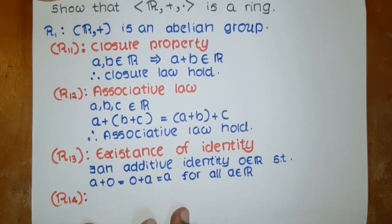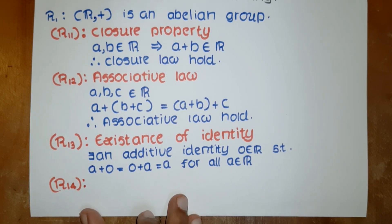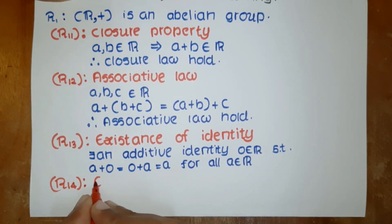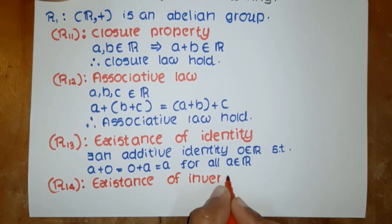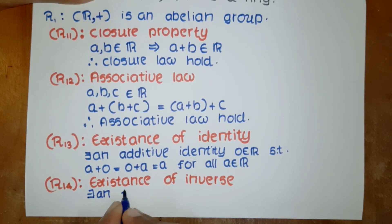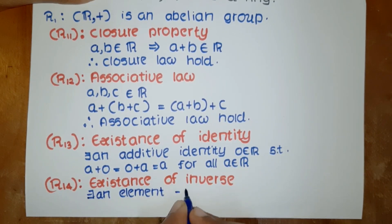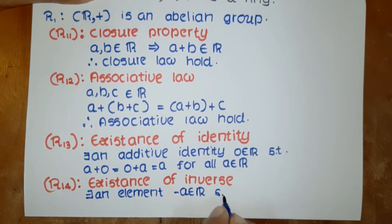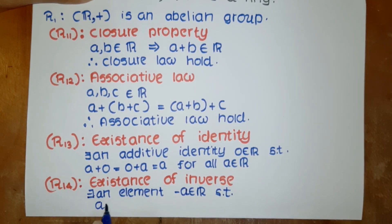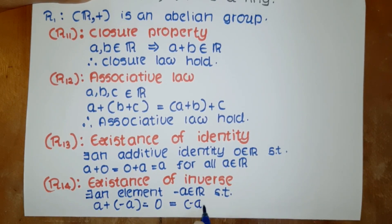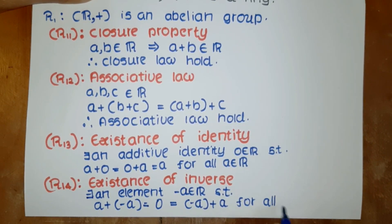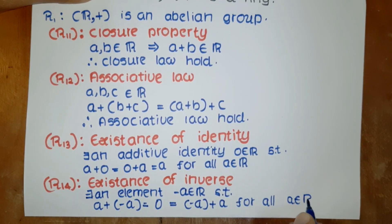Here, zero is the additive identity, sometimes called the zero element. Under the fourth axiom, there exists an element minus a in the real numbers such that a plus (minus a) equals zero equals (minus a) plus a, for all a in R. Here, minus a is the additive inverse of a.